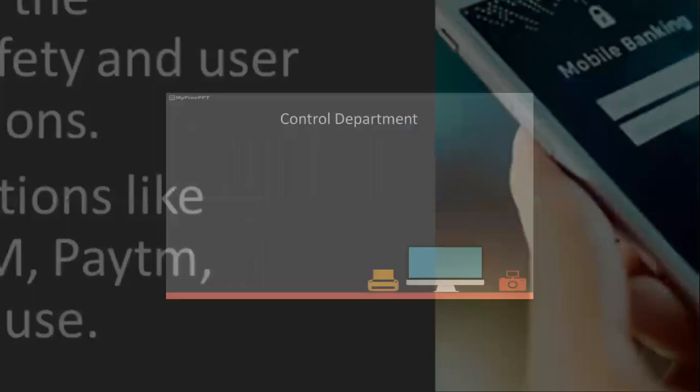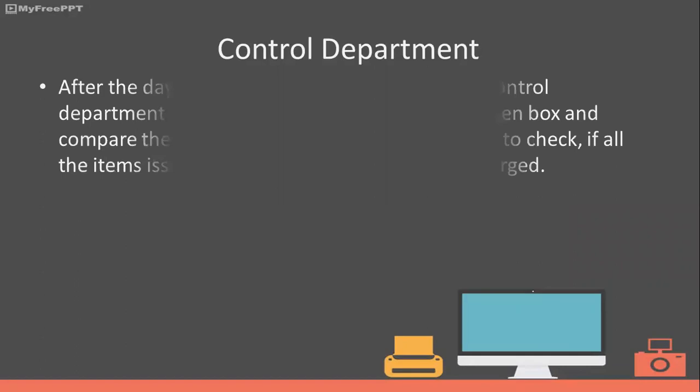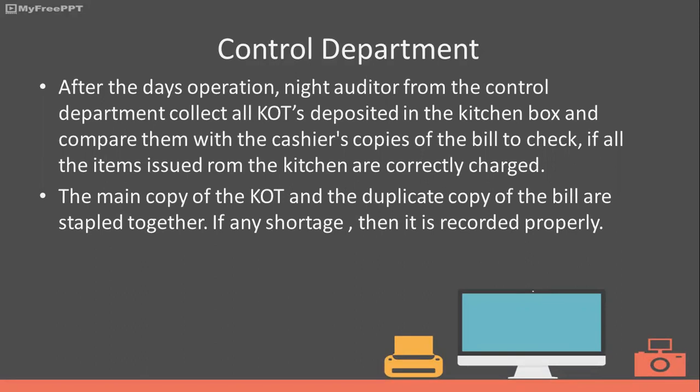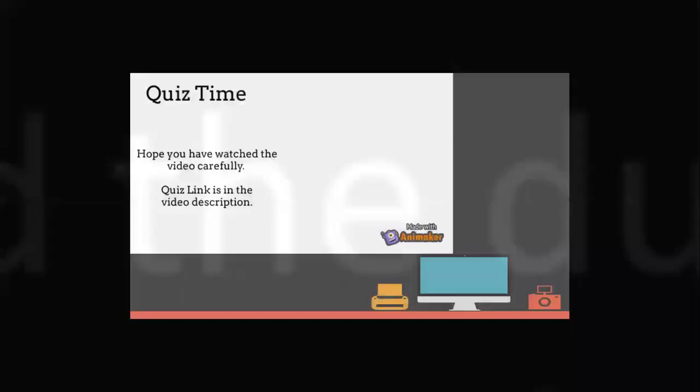After the day's operations, the night auditor from the control department collects all the KOTs deposited in the kitchen box and compares them with the cashier's copies of the bill to check that all items issued from the kitchen are correctly charged. The main copy of the KOT and the duplicate copy of the bill are stapled together. Any shortage is recorded, and the concerned waiter or server will be asked for an explanation.